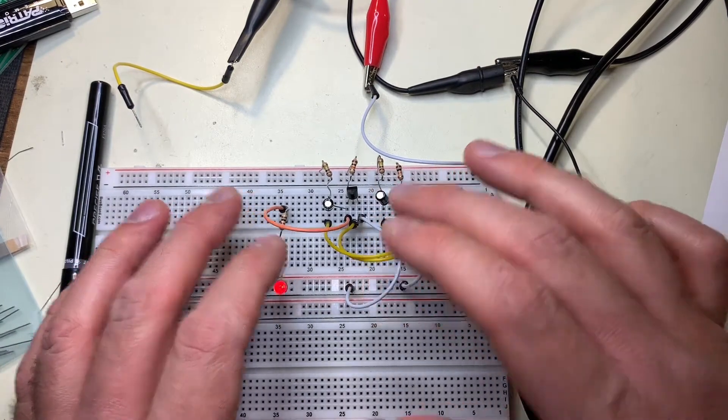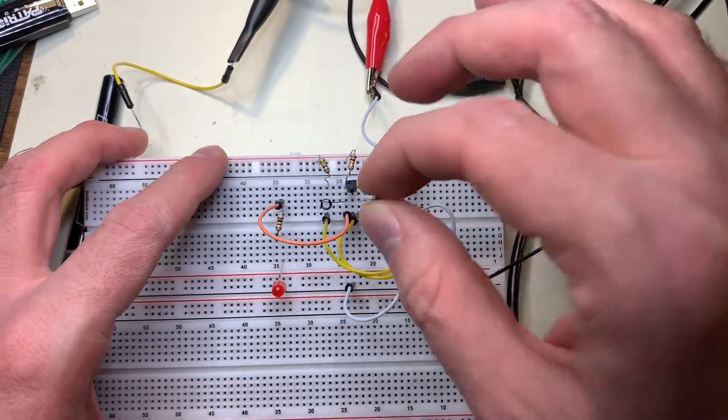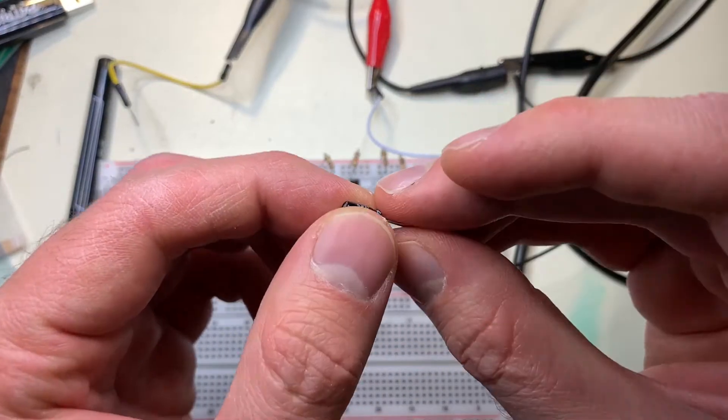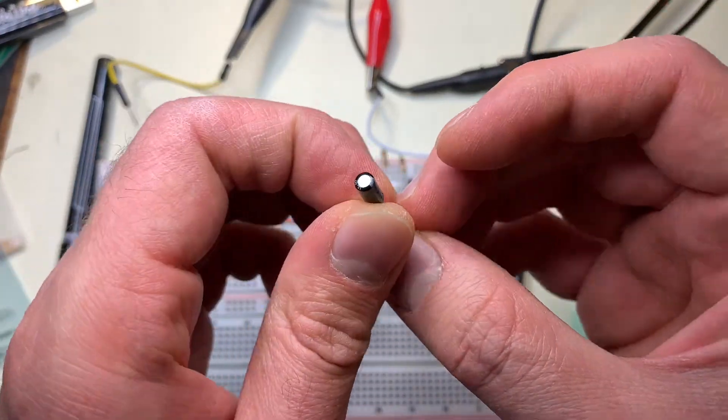And also, if you might have noticed, we're using electrolytic capacitors, because those are what's included with the kit. These are 10 microfarad polarized electrolytic capacitors.